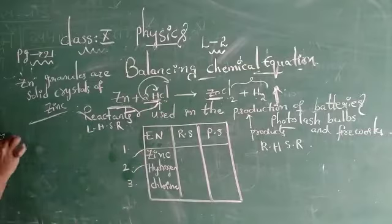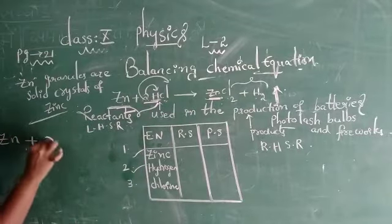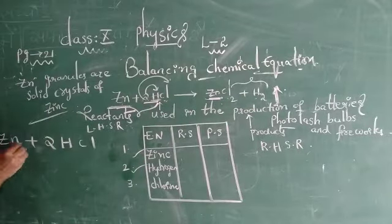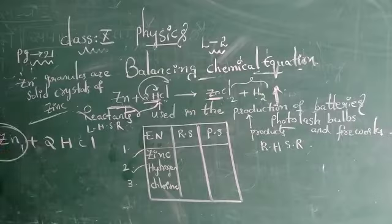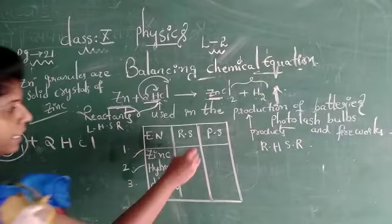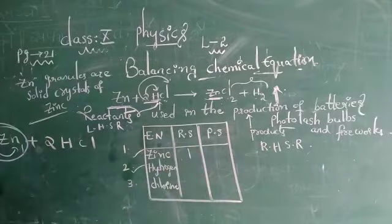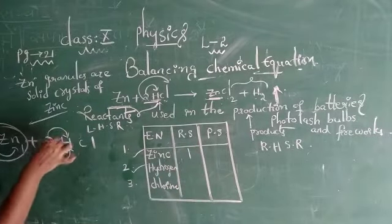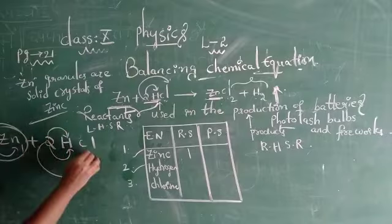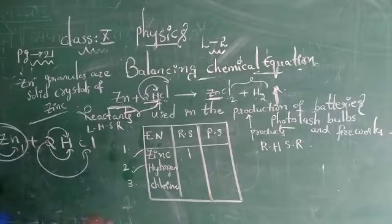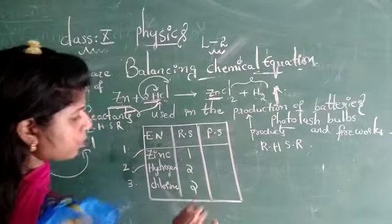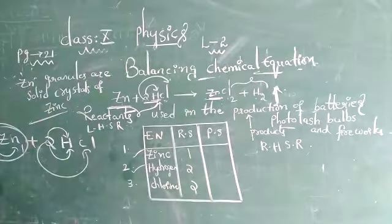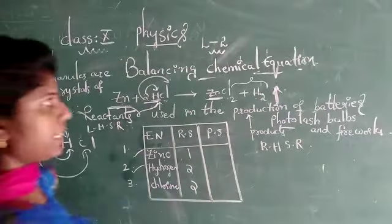Zn plus 2HCl: near the zinc there is no number, so place 1. Multiply 1 times 1 — 1 zinc is present. The 2 in 2HCl is applicable for hydrogen, and the 2 is applicable for chlorine. So 2 hydrogens are present and 2 chlorines are present. Reactants side is completed.